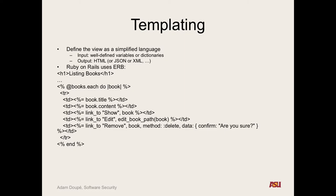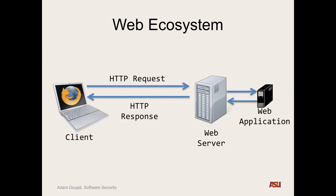The idea with Rails is: programmers are developing the same applications over and over — you have to render HTML content, you have to talk to a database — so Rails provides a platform and library for people to do that. That's a brief introduction to more modern web application frameworks, so you can see you can't always assume that a URL tells you exactly which code is being executed on the backend.